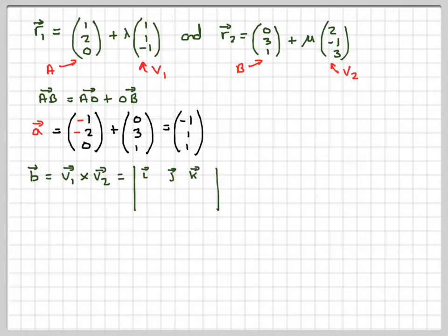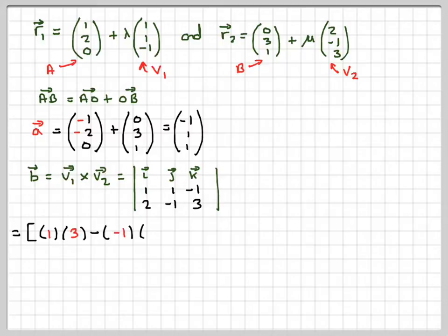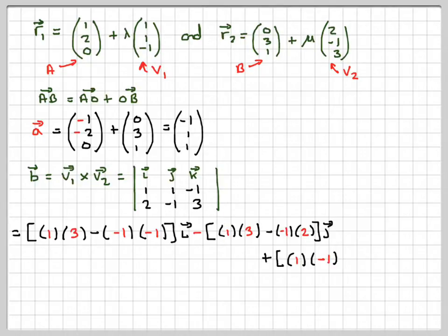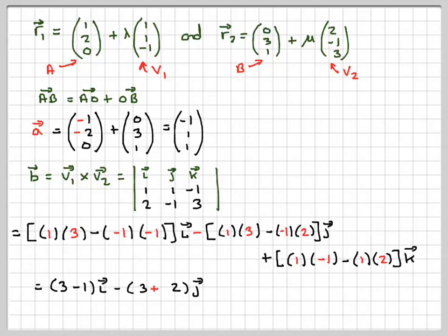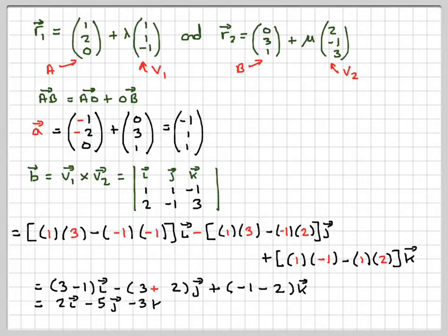We put this in the form I, J, K. We write down the first directional vector: (1, 1, -1), and the second: (2, -1, 3). Covering up I and finding the determinant: 1×3 minus (-1)×(-1) = 3 - 1 = 2, times I. Next, always minus: covering J, we get 1×3 minus (-1)×2 = 3 + 2 = 5, times J with a minus. Last, plus: covering K, we get 1×(-1) minus 1×2 = -1 - 2 = -3, times K. So we get 2i minus 5j minus 3k.